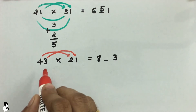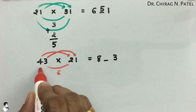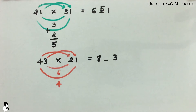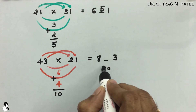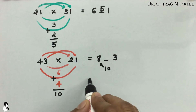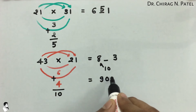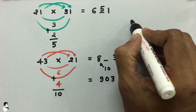For the middle digit: 3 into 2 is 6 and 4 into 1 is 4, and their sum is 10. Write 10 in the middle position; carry the 1 forward to the previous value, so 8 plus 1 is 9. The final answer is 903.